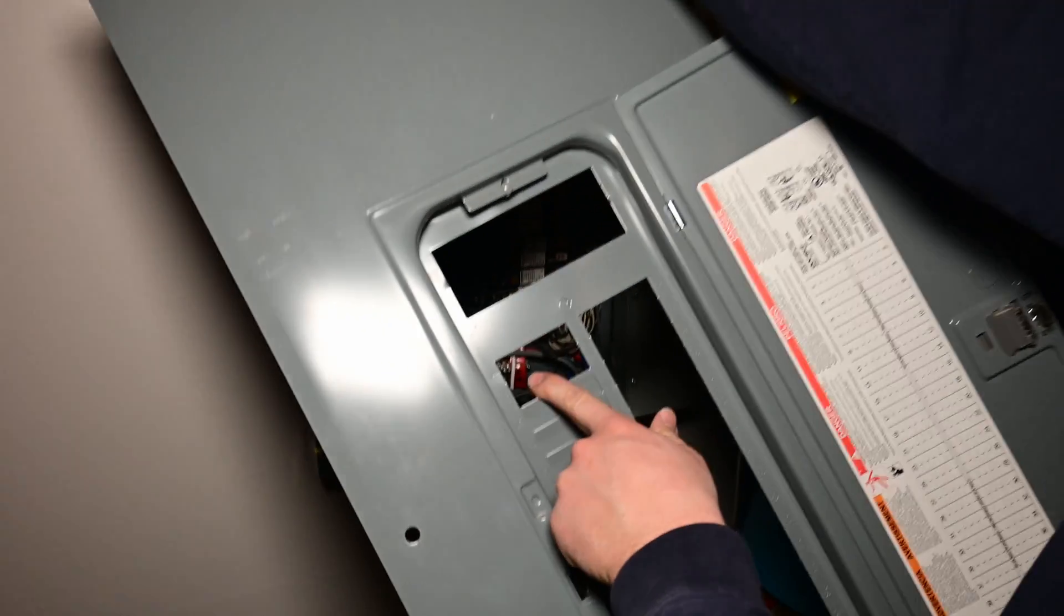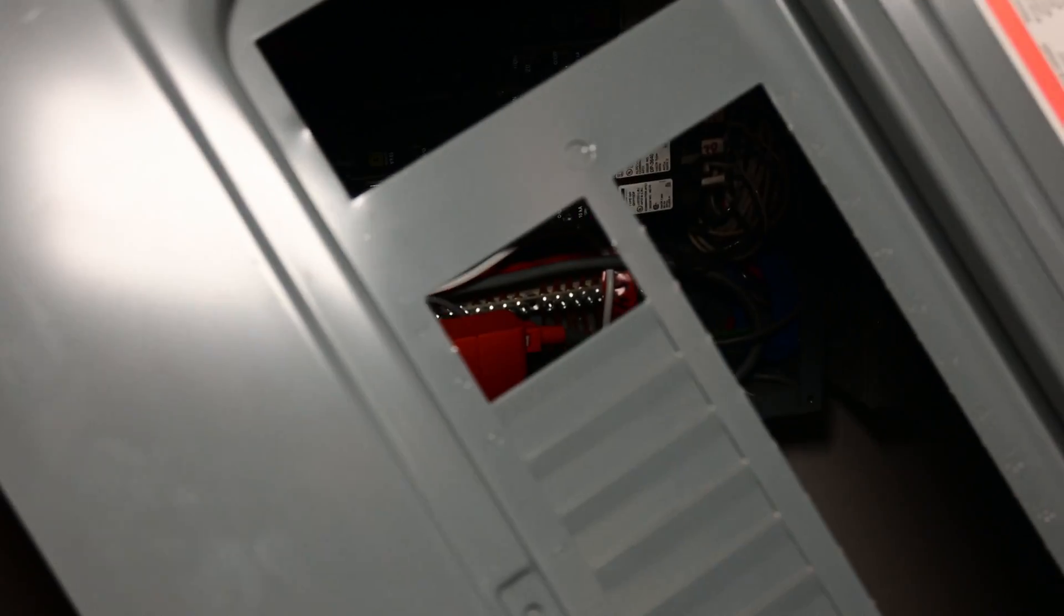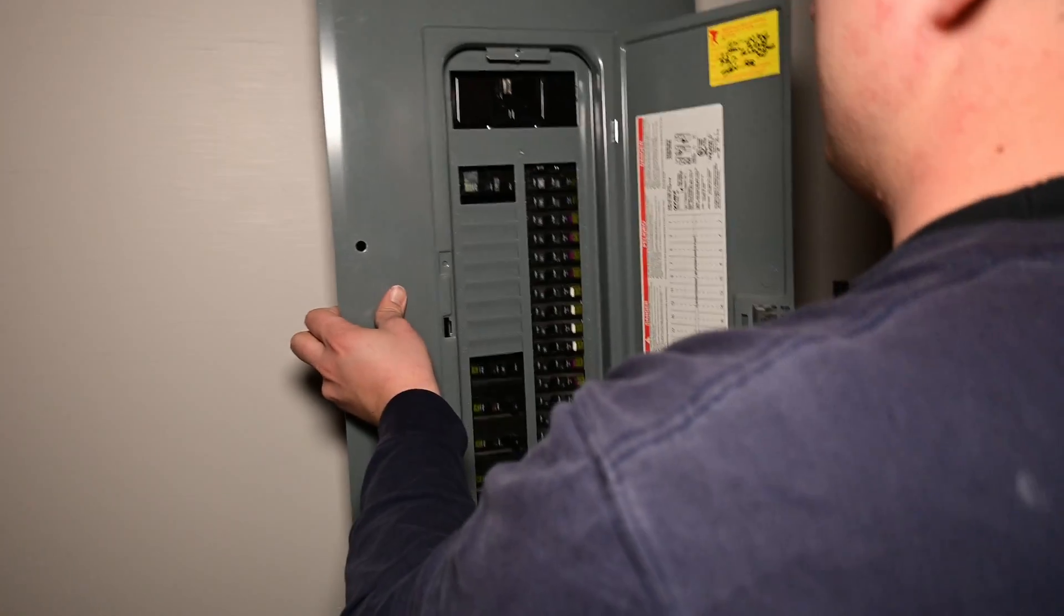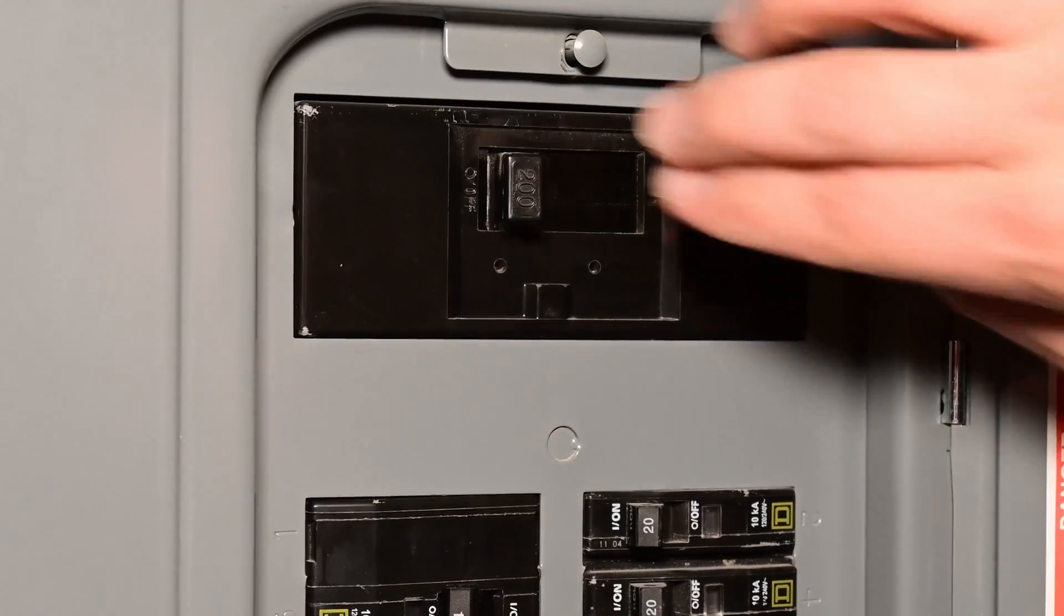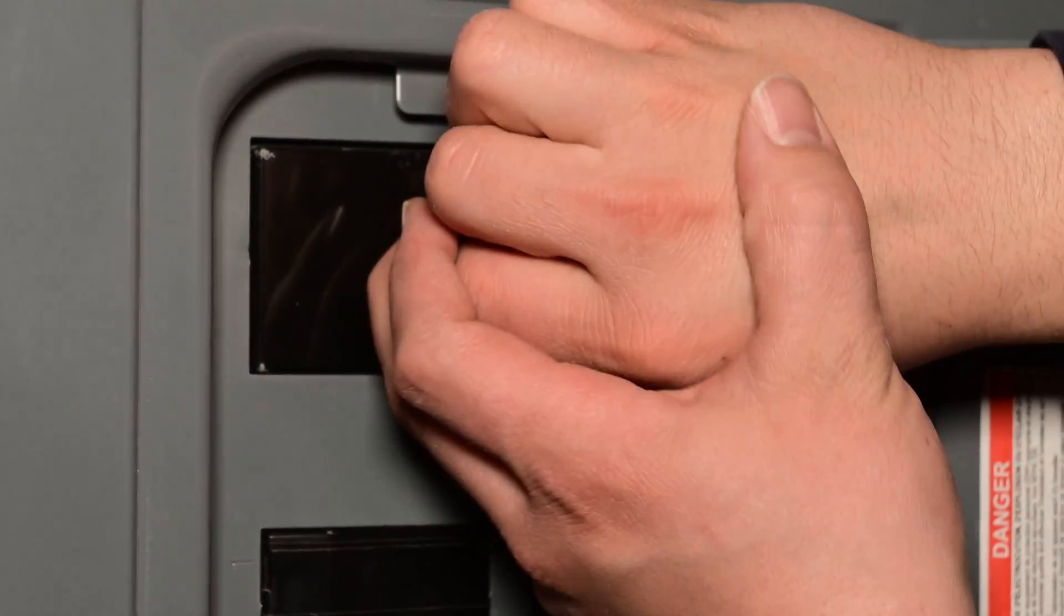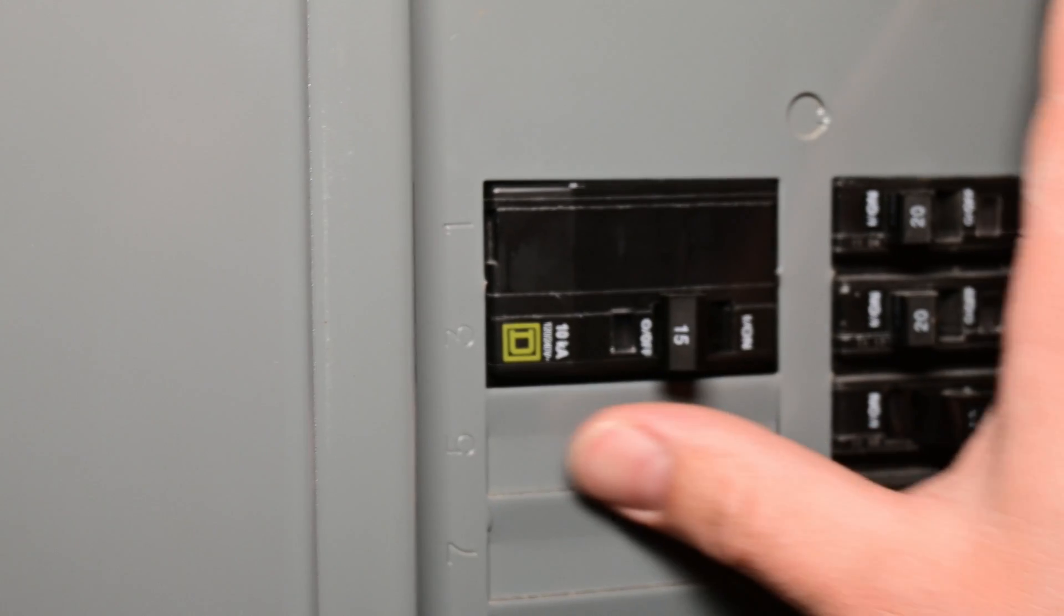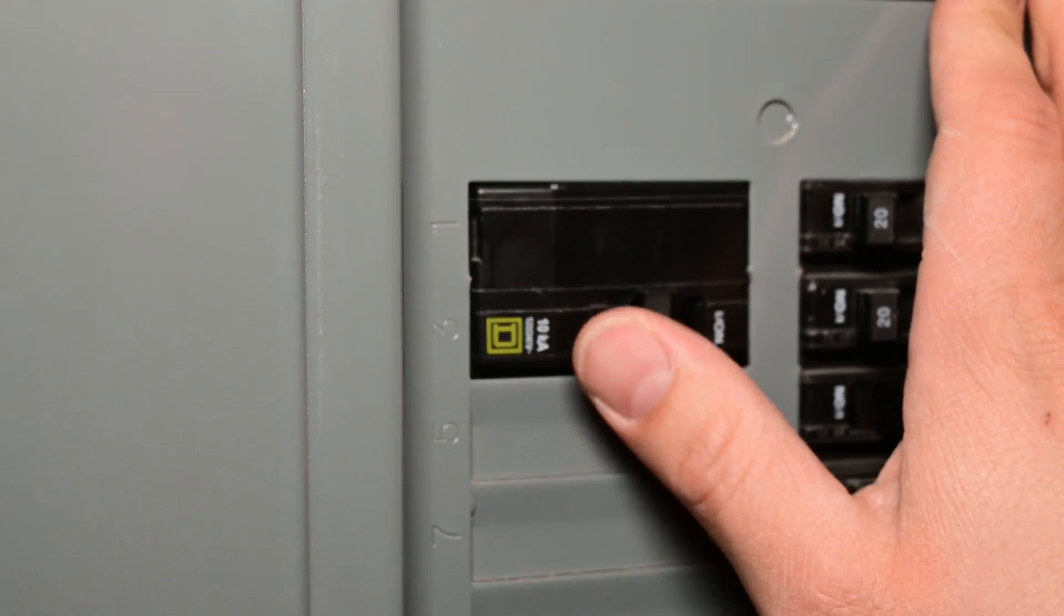So just remove the knockouts in the panel cover for the new breaker if you did install one, and then we'll go ahead and put this in place. Now we can go ahead and turn on the main breaker to the house. And then we'll turn on the breaker that is going to be powering the sense energy monitor.